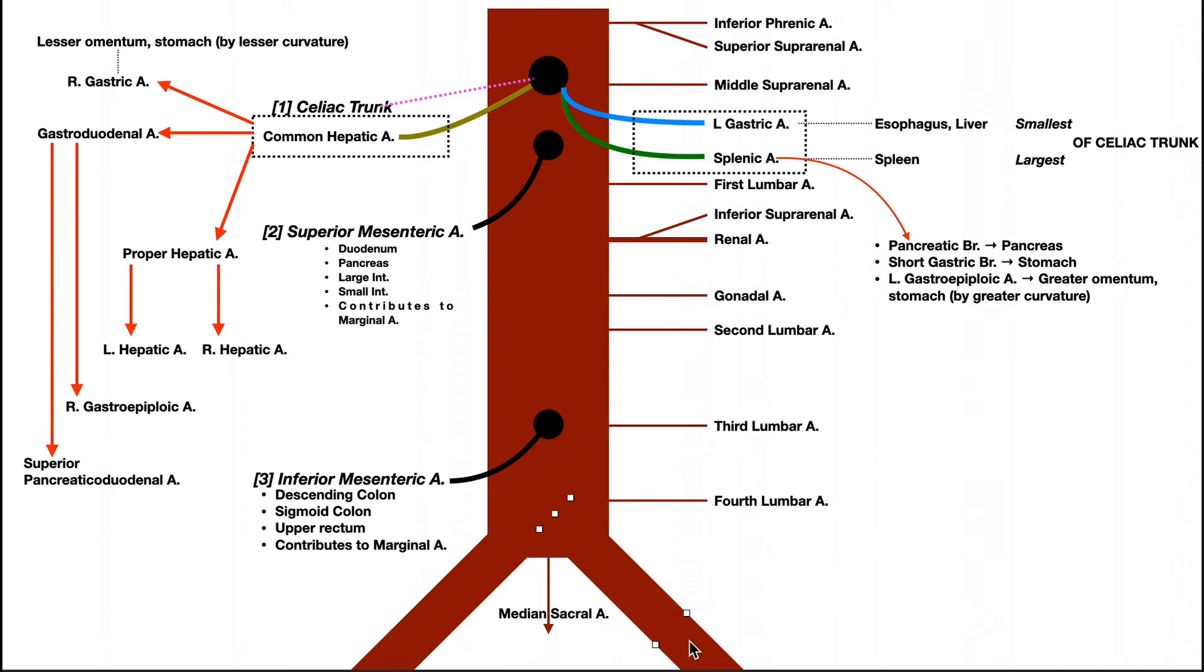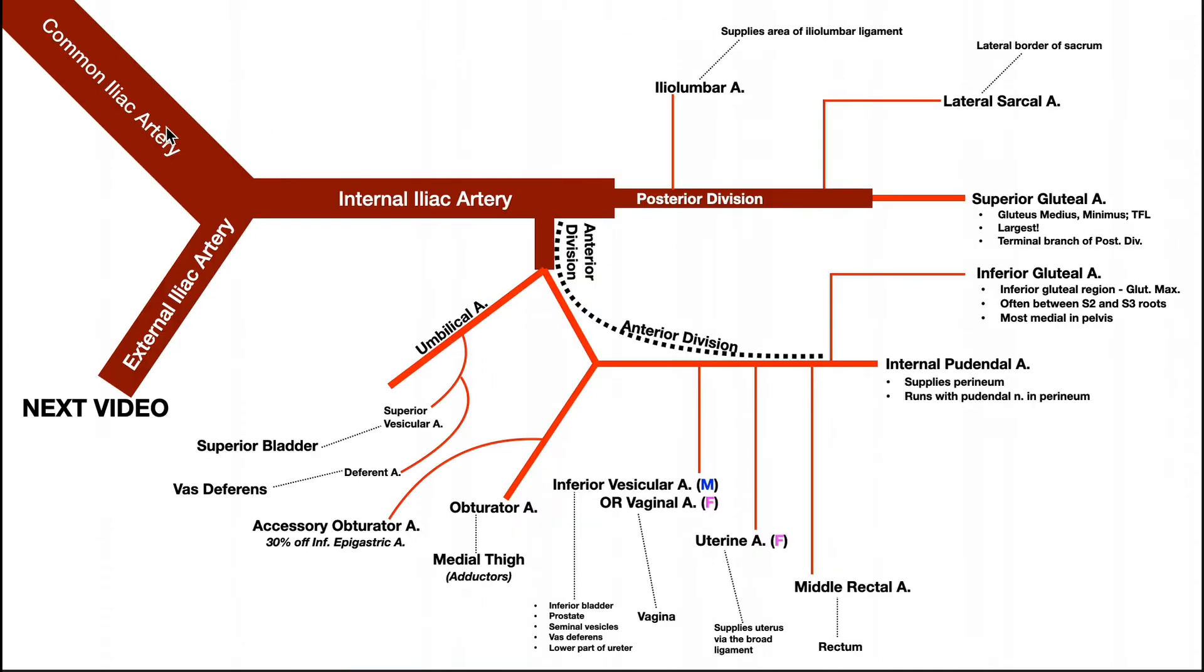So if we follow that common iliac artery down as we see right here, it itself branches or bifurcates into two branches. This one over here is the external iliac artery. This one, as it continues downward, it'll give off several branches, but it'll pass under the inguinal ligament and become the femoral artery as it travels down the thigh.